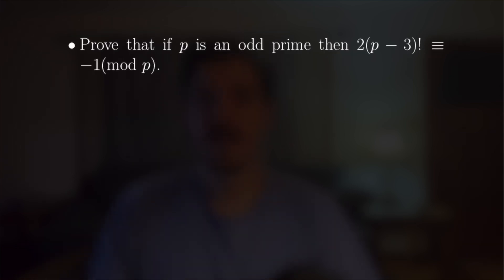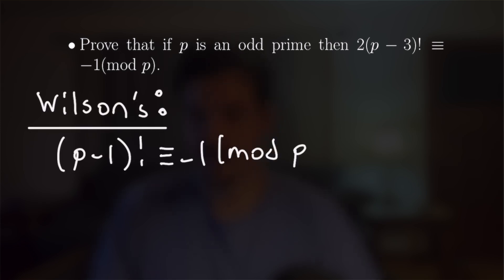So our next problem is a proof involving Wilson's theorem, we want to prove that if p is an odd prime, that 2(p-3)! is congruent to -1 mod p. So we're going to get to this result by direct proof. And we're going to start with Wilson's theorem, which is stated as (p-1)! is congruent to -1 mod p.